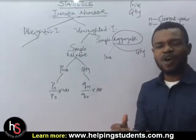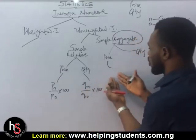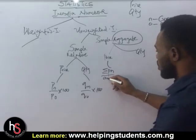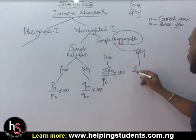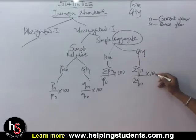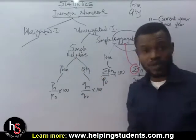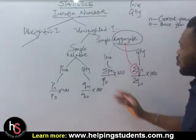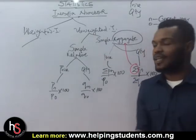When we come to the simple aggregate, take note of the word 'aggregate' — we now consider the summation of values. For price under simple aggregate we have summation Pn over summation Po times 100. For quantity we have summation Qn over summation Qo times 100. The reason is that under simple aggregate we sum across all items, unlike the simple relative where we look at each item individually.